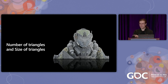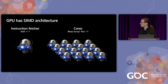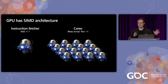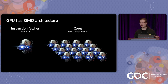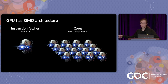What matters is triangle size on screen. To explain why, we need to delve into GPU architecture. GPUs are good at one thing: rendering pixels to your screen. They have a lot of very specialized cores — so specialized that not all of them have an instruction fetcher, which is what tells them what to do. Instead, they're grouped so they obey the same instruction — a so-called single instruction multiple data (SIMD) architecture.